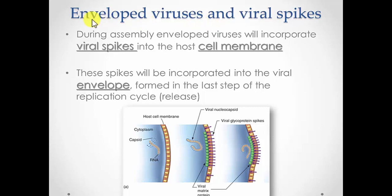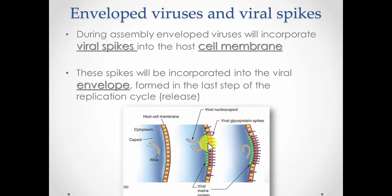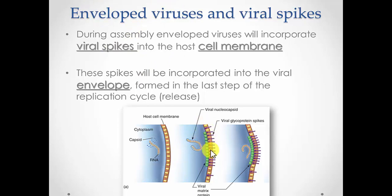For envelope viruses there's an extra step in assembly. The envelope comes from the host cell being infected. Once the capsid — also called the nucleocapsid — is formed, it lines itself next to the membrane of the host along with viral proteins assembled into the membrane. Part of the envelope involves creating spikes laid down in the cell membrane, with the capsid attaching to those spikes on the bottom side. Then in the release stage, this buds outward and pinches out, becoming the new viral envelope.